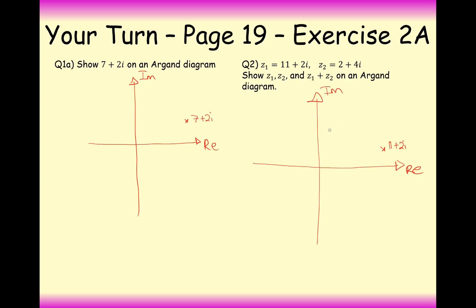And then 2 plus 4i, so it's going to be twice as high up here. 2 plus 4i is going to be up there. And then if we add them together, z1 plus z2 is going to be 11 plus 2 is 13, and 2 plus 4 is 6, so it's 6i. So this is going to be at 13 plus 6i, which is all the way up here.